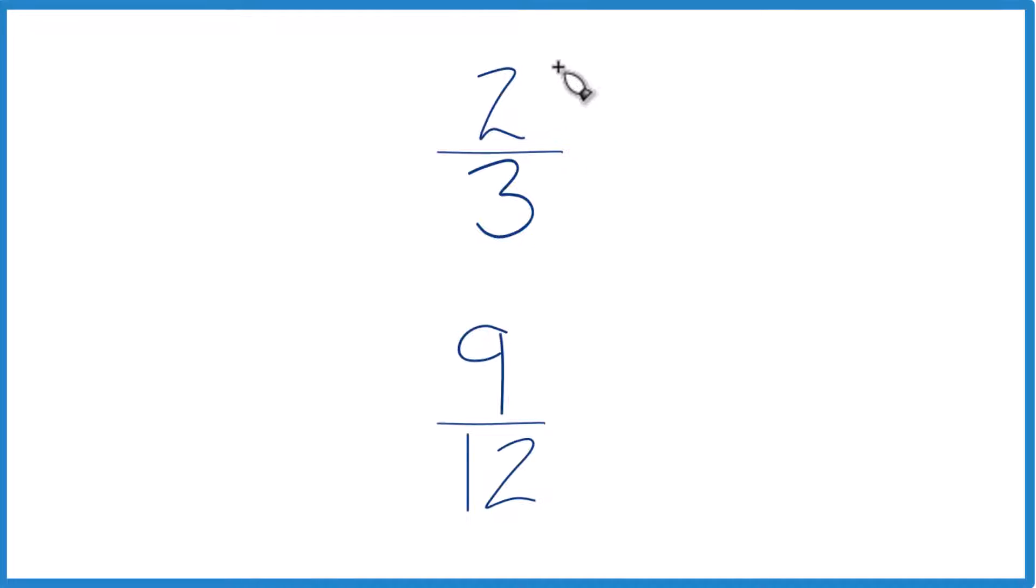Here's how you can tell which one of these fractions is larger, two-thirds or nine-twelfths.